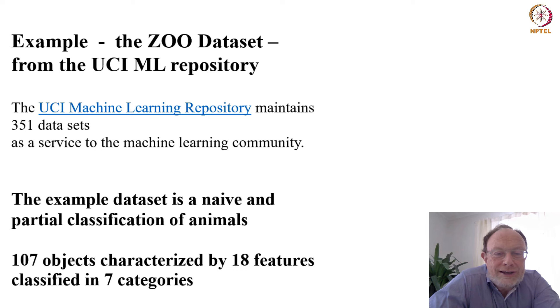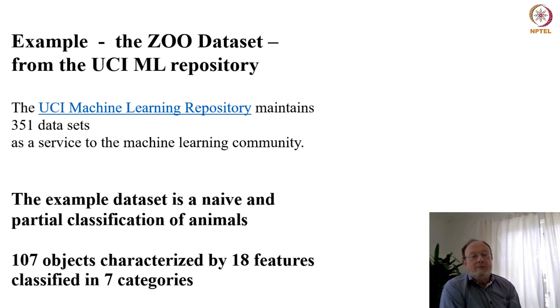So my selection was very practical. Here I need a simple example to use as a basis for some discussions, and so this is a very naive and partial classification of animals. There are 107 objects or data items, and they are each characterized by 18 features. 18 is not so small but not so large either. And essentially these 107 objects are categorized in seven categories. So that's the example we will look at.